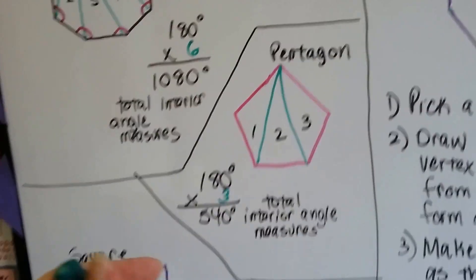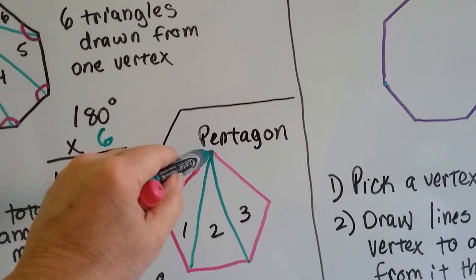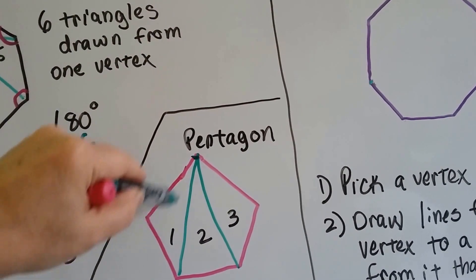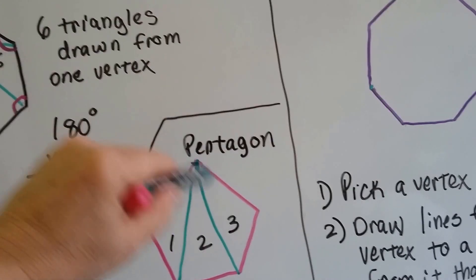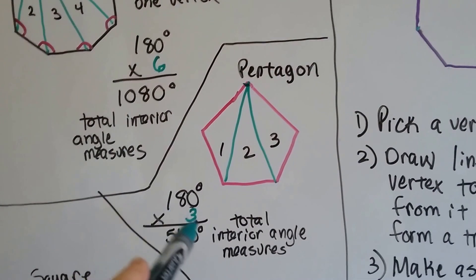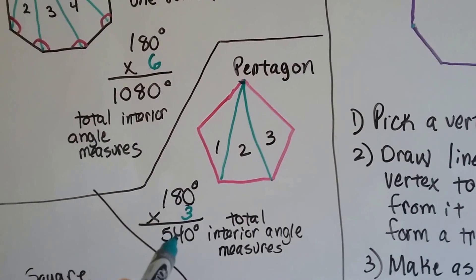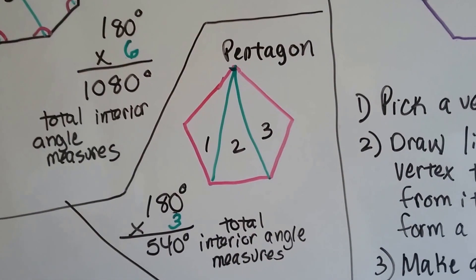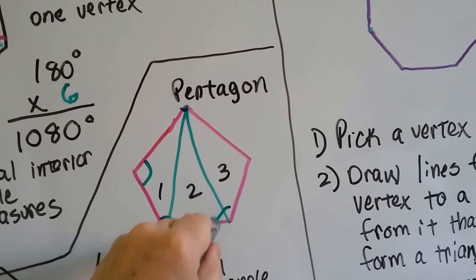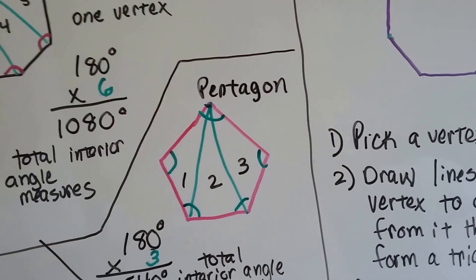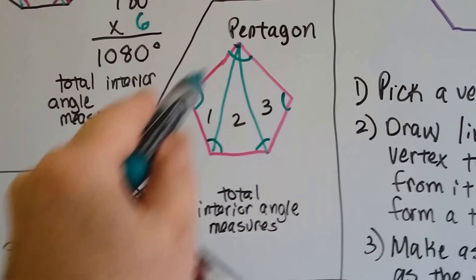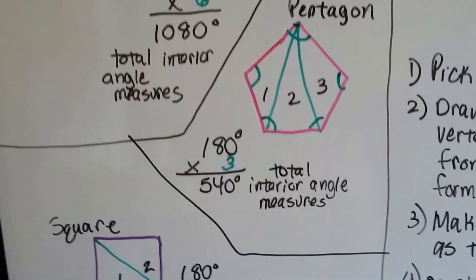For a pentagon, it's the same thing. I chose a vertex, skipping one to create a triangle, then drew lines to the next vertices. I made 3 triangles, which gives 3 times 180, or 540 degrees, for the interior angles. There are 5 interior angles — 5 sides because it's a pentagon — so the total interior measure of these 5 angles is 540 degrees.